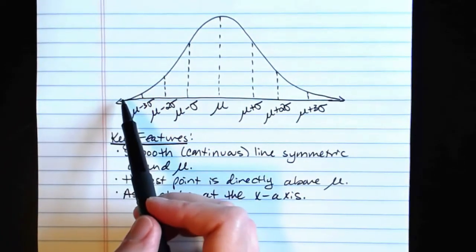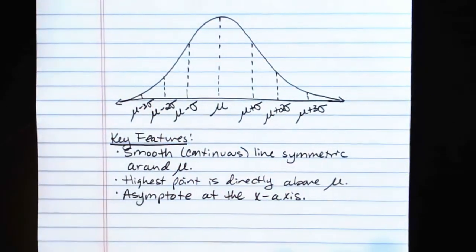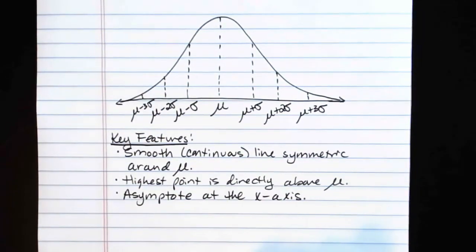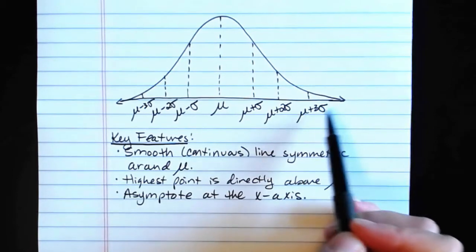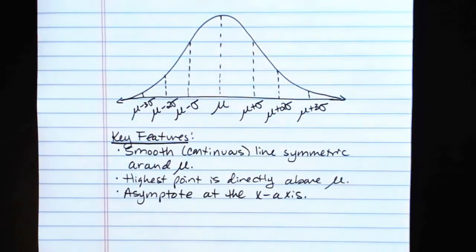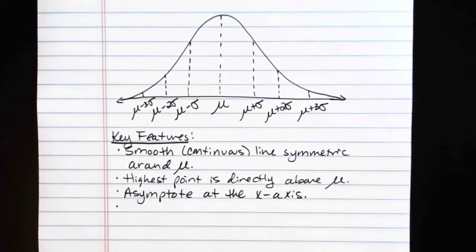It would get closer and closer and closer and closer to going completely flat, but it would never actually touch the x-axis, and it would never cross the x-axis. The same is true if we followed the graph forever to the right. It would never touch the x-axis, and it would never cross the x-axis.